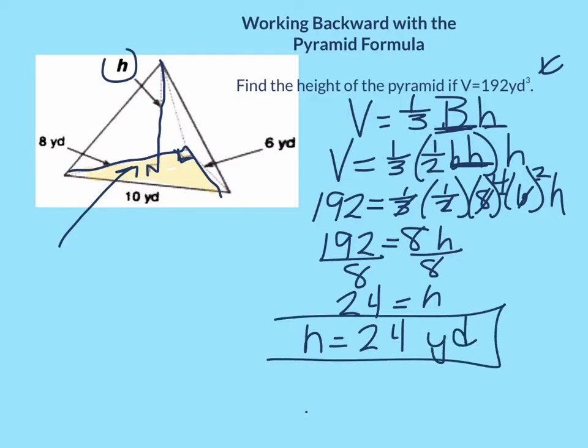Now people always ask me, what about the 10 right here? Well this is actually the hypotenuse of that right triangle, so it's extra information. You don't need that to find the area of the base.